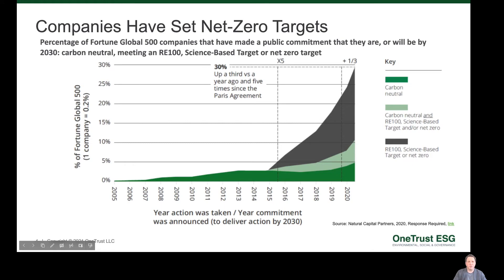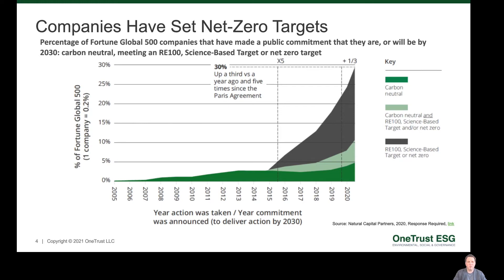Companies are also accelerating what they're doing when it comes to climate change. Companies have set net zero targets — over a third of Global 500 companies have made public commitments that they are or will be carbon neutral, meeting RE100 or science-based targets, or even net zero and net negative by 2030. We're seeing an increasing number of companies moving up their responses to climate change. Many companies need to baseline where they are today before they can make these commitments, and that's where a lot of your ESG programs will come into place.